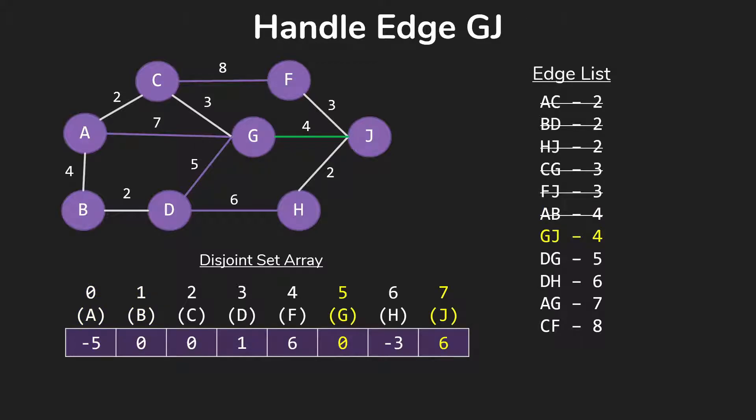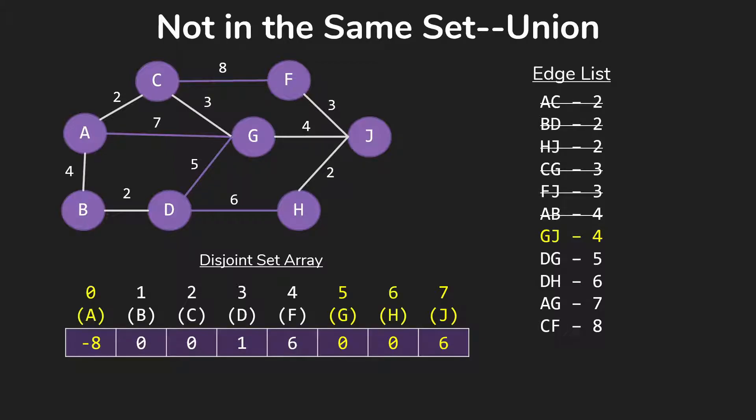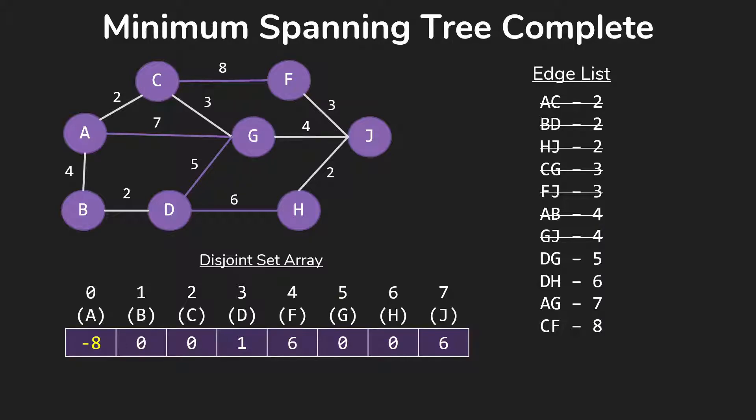so now we're going to handle edge GJ. G is in set 0, J is in set 6. So once again, they're not in the same set, so we do the union, adding that edge to our tree. And this actually finishes things. When we go to check our loop, we see that set got us to eight items, which is how many we had. We have eight vertices in this graph.